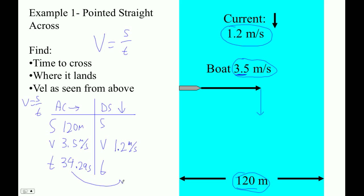Time can get pushed across. So that's 34.29 seconds. And now we can use velocity times time as displacement in the downstream direction. And that's how far downstream it lands.